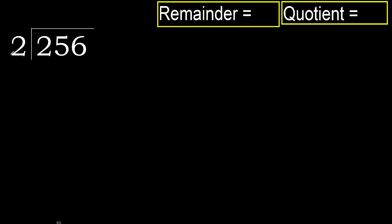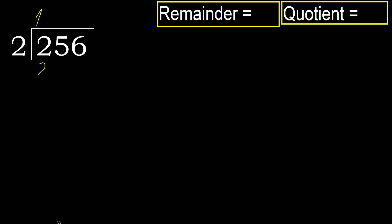256 divided by 2. 2 is not less, therefore with 2. 2 multiplied by which number is nearest, but not greater? 2 multiplied by 2 is 4 — 4 is greater. 2 multiplied by 1 is 2, is not greater. Subtract, next.